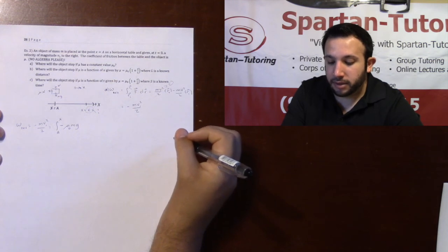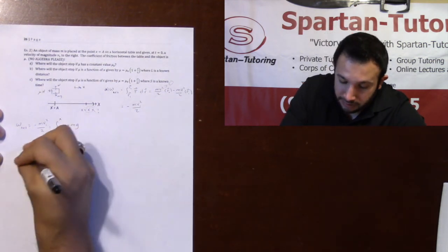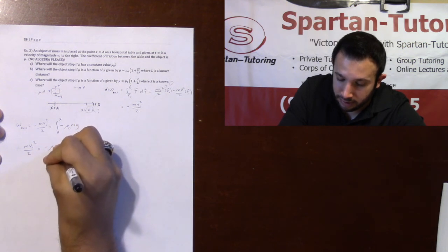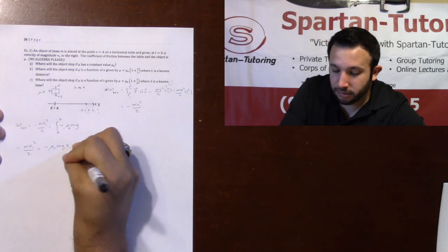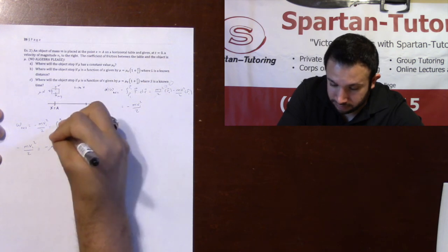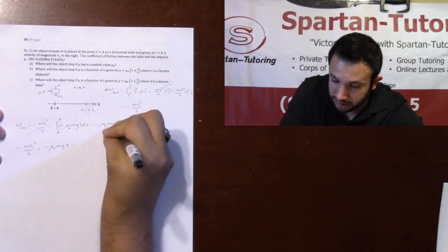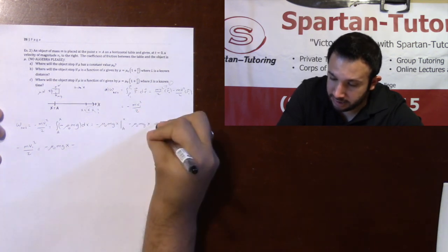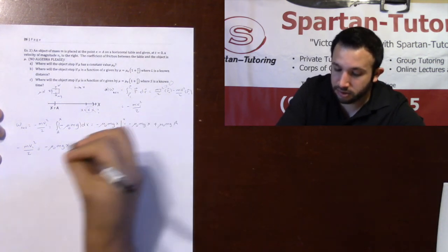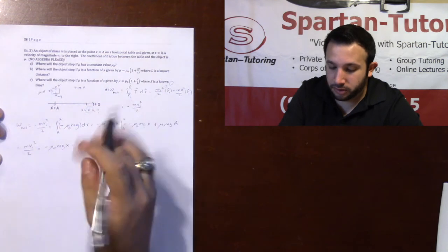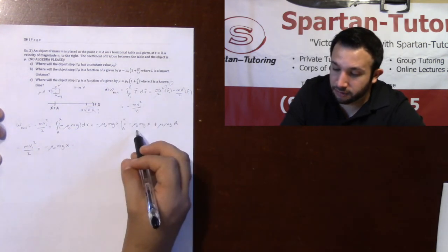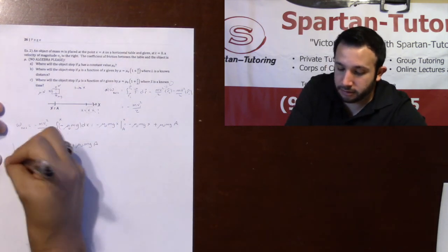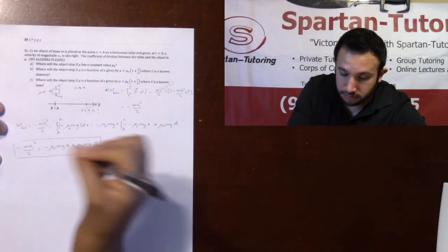Since mu is the constant value mu naught, all you need to do is integrate. So negative mv1² over 2 equals negative mu naught·mg, and integrating gives negative mu naught·mg·x evaluated from a to x. That's negative mu naught·mg·x minus negative mu naught·mg·a. Therefore, what will get you full credit — because it said no algebra — is: negative mv1² over 2 equals negative mu naught·mg·x plus mu naught·mg·a. No algebra, don't do it. That's it for part a.